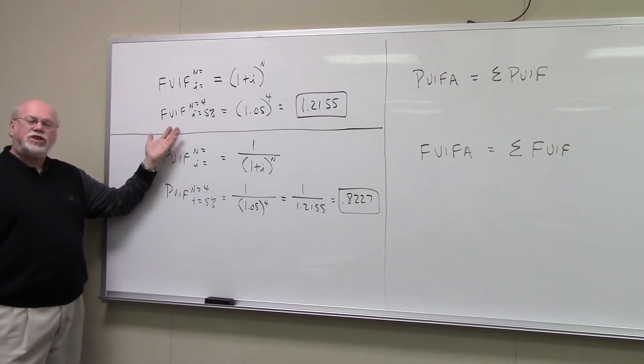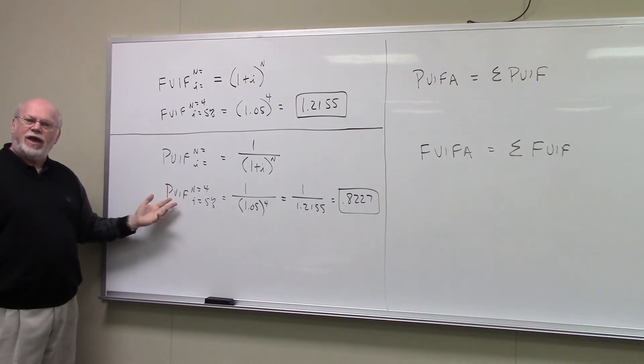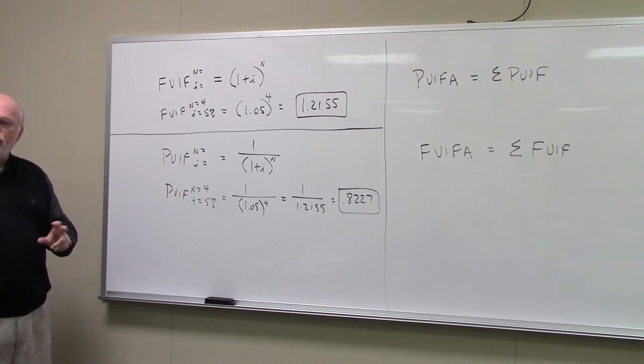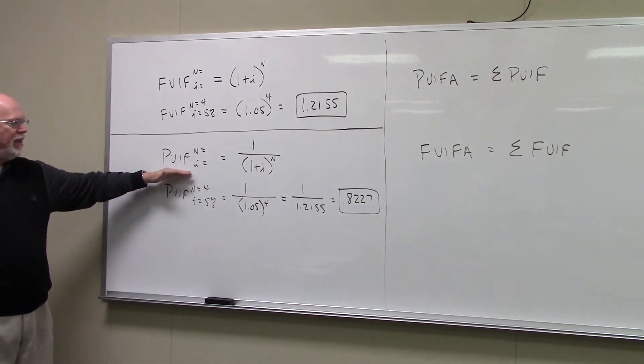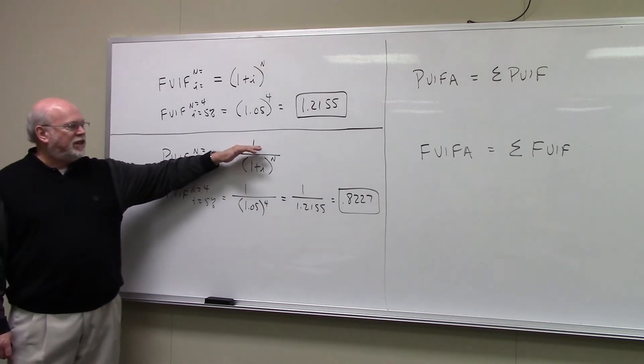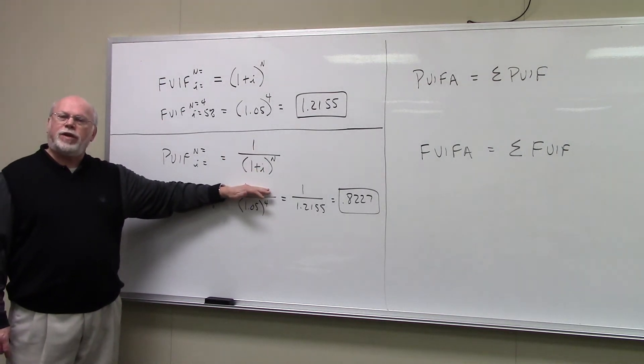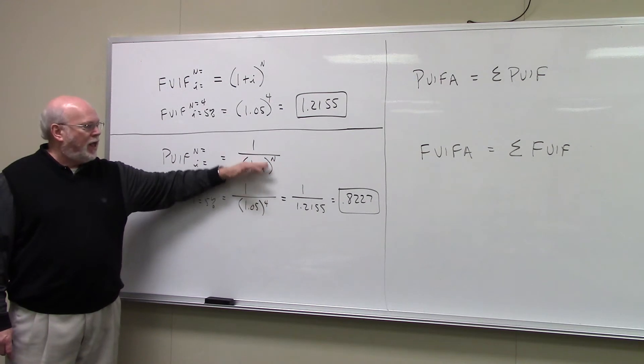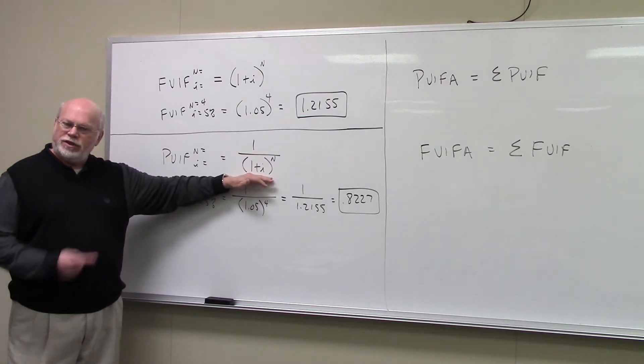What's the relationship between your FVIF and your PVIF? Well, they're the reciprocal of one another. They do just the opposite. Indeed your PVIF, your present value interest factor, is equal to 1 over 1 plus I raised to the N. 1 over this future value interest factor.